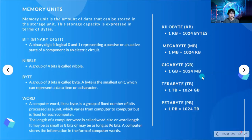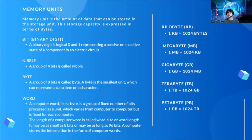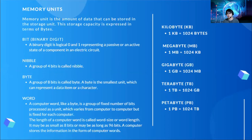The memory unit conversions are: one kilobyte (KB) is equal to 1024 bytes. One megabyte (MB) is equal to 1024 kilobytes. One gigabyte (GB) is equal to 1024 megabytes. One terabyte (TB) is equal to 1024 gigabytes. And one petabyte (PB) is equal to 1024 terabytes.